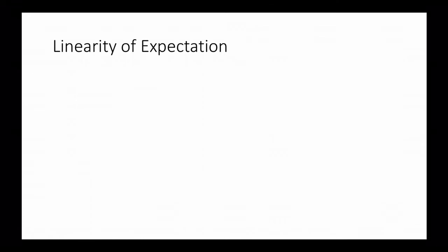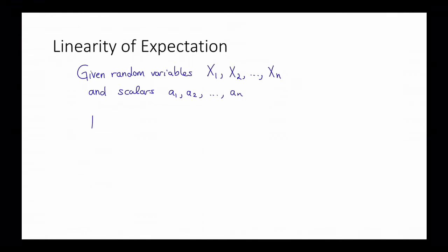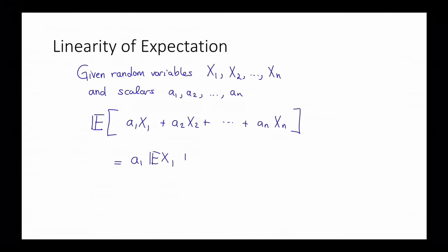So what is linearity of expectation? If we're given some random variables x1, x2, up to xn, and we also have some scalars a1, a2, up to an — so these could just be numbers — then the expectation of the weighted sum of these random variables, that is a1·x1 plus a2·x2 plus ... plus an·xn, is just equal to the weighted sum of the expectations: a1·E[x1] plus a2·E[x2] plus ... plus an·E[xn].